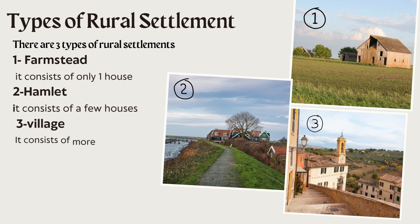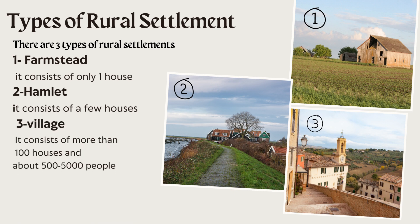There are three types of rural settlements as we see in our surroundings. The first type is farmstead — it consists of only one house. The second one is hamlet — it consists of a few houses.